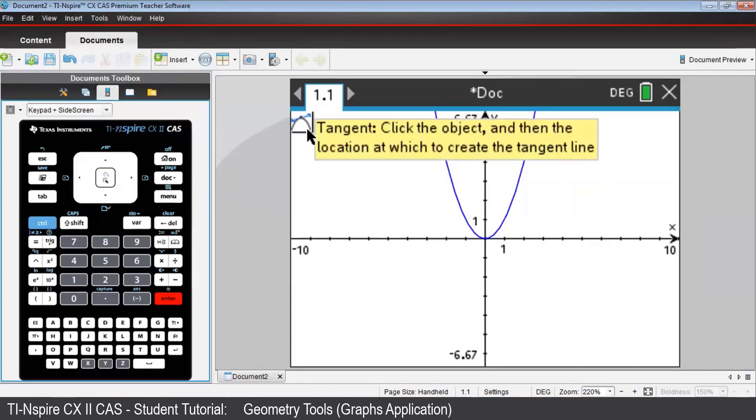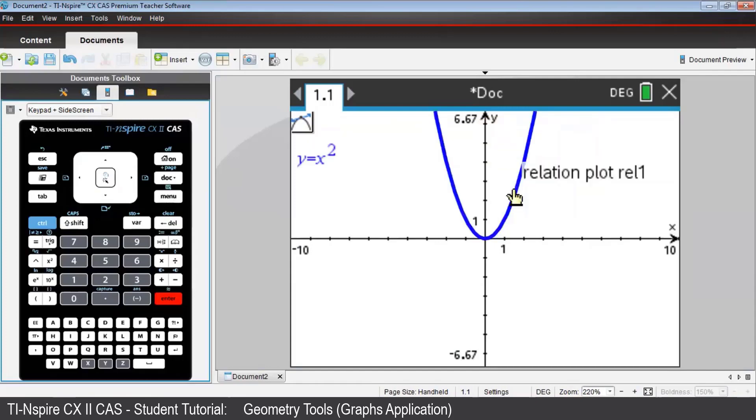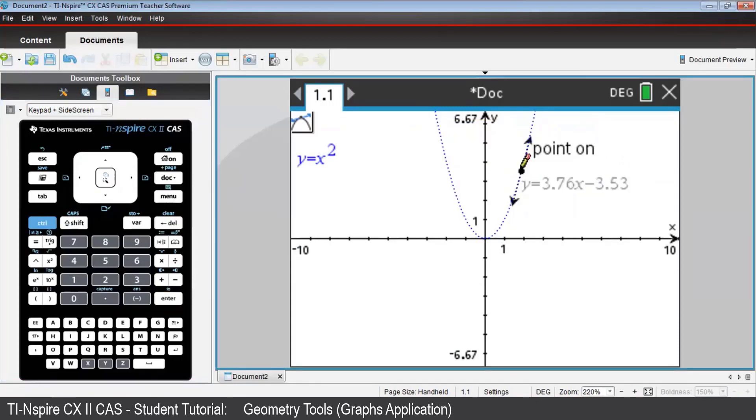Here, we're told to first click, using the clickpad, on the object. Here, it's the parabola. And then select a location, on the parabola, at which the tangent needs to be drawn.